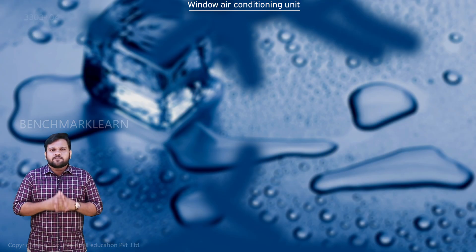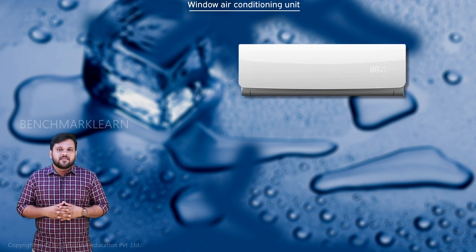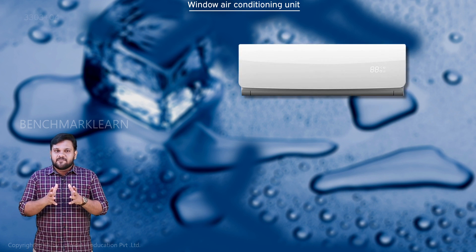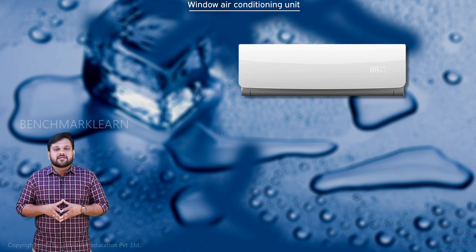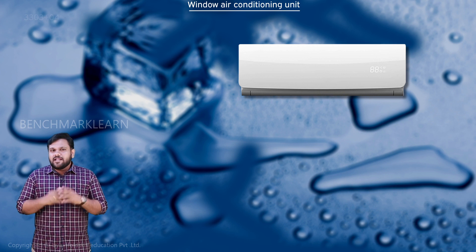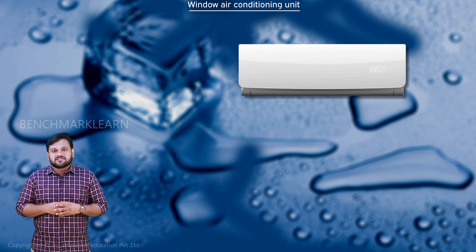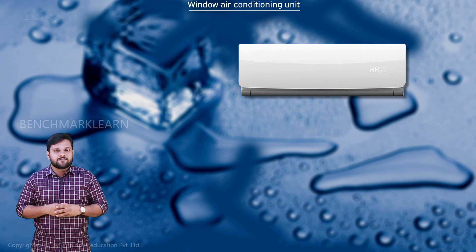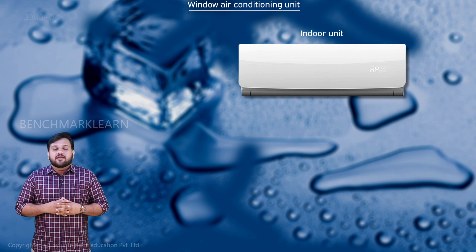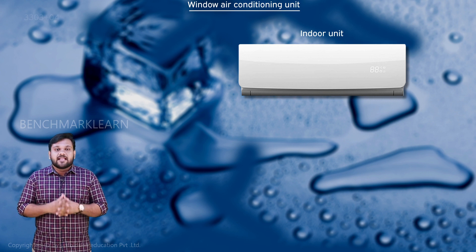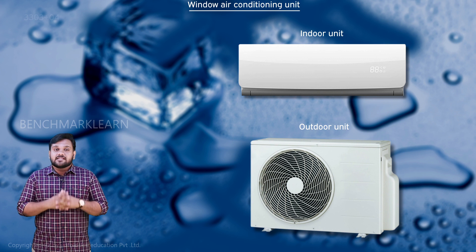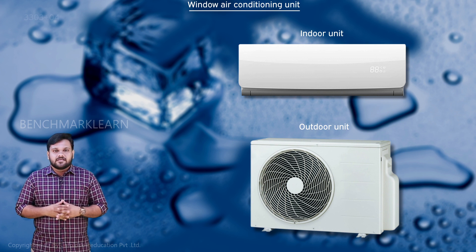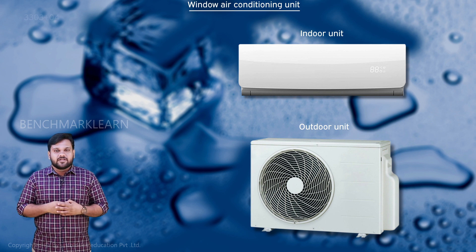Nowadays split type AC units are commonly used. The working principle is the same as that of a window AC unit, but it is more user friendly and efficient. The only difference is that instead of a single unit, this system is divided into two units: an indoor unit containing the evaporator and the fan, and an outdoor unit containing the rest of the components. The refrigerant is circulated through copper tubing inside the two units.